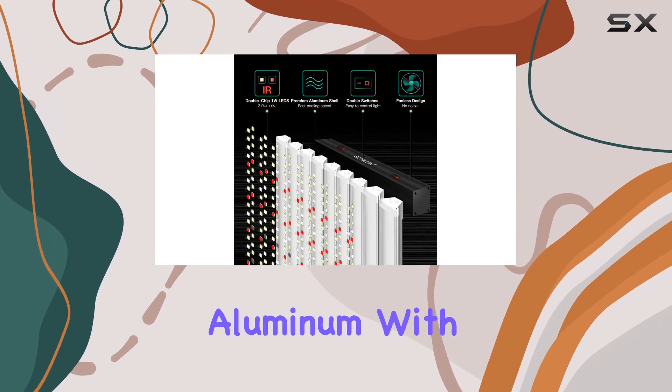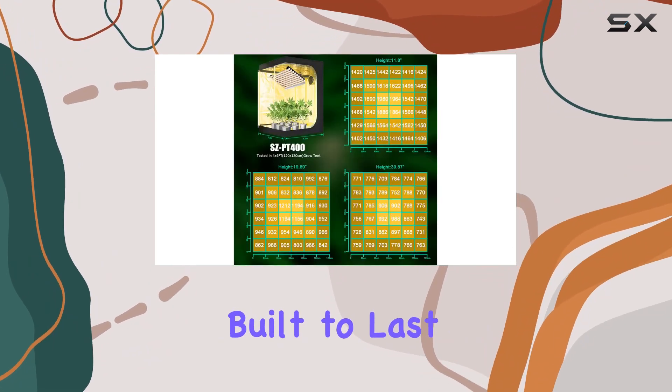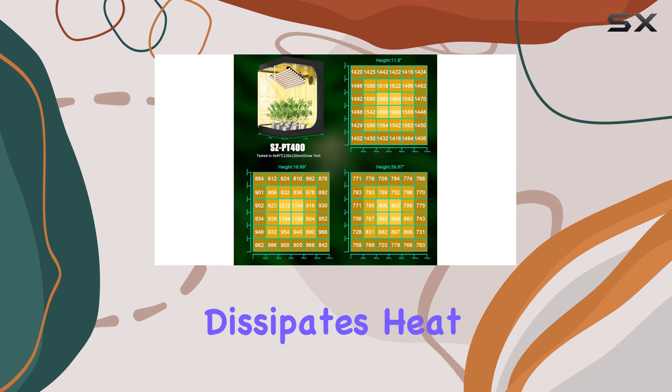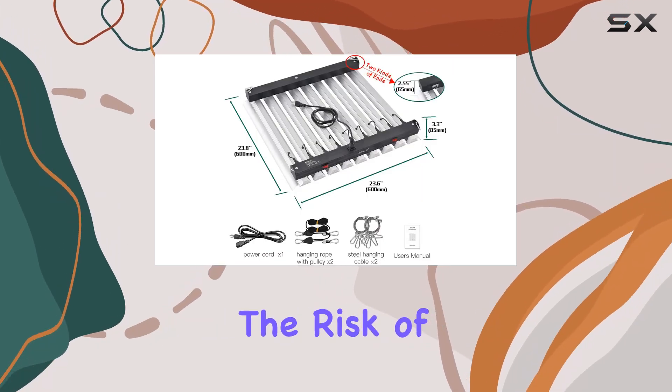Constructed from durable aluminum with a polished finish, the Schlux LED Grow Light is built to last and effectively dissipates heat, ensuring your plants receive consistent, high-quality light without the risk of overheating.